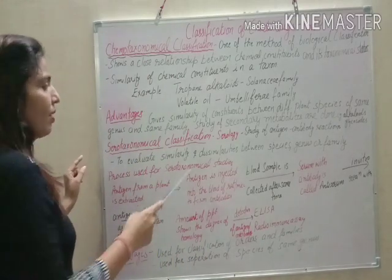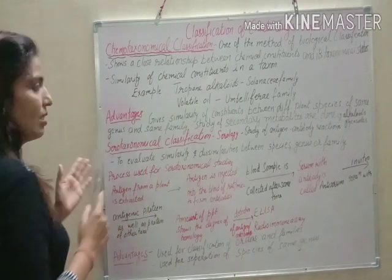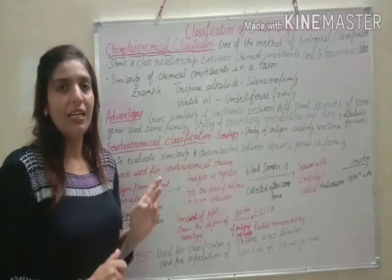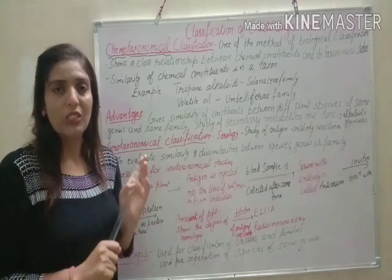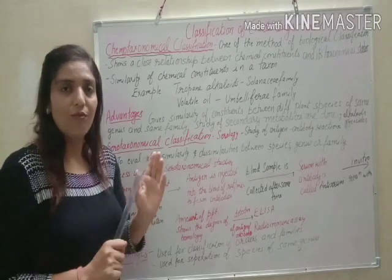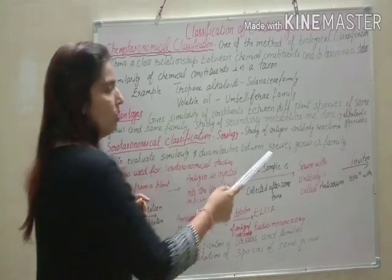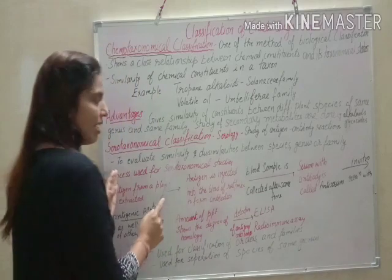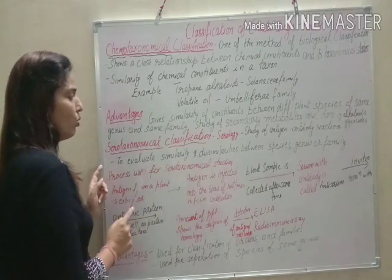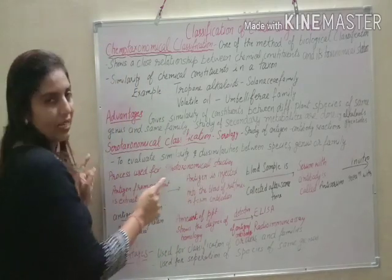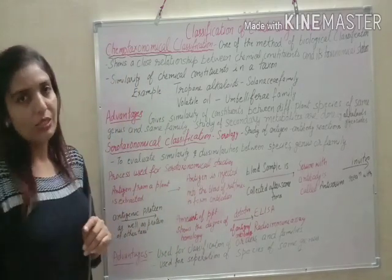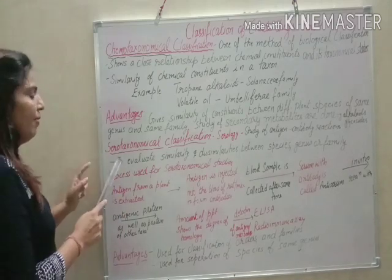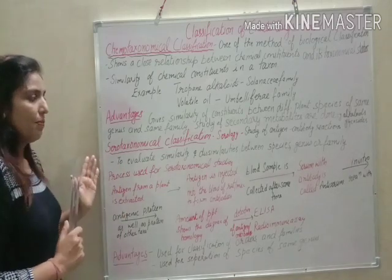We can study the similarity and dissimilarity between species, genus, and family. We can evaluate these similarities and dissimilarities through the sero-taxonomical classification process.